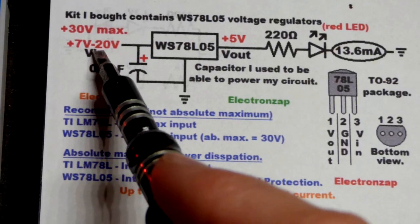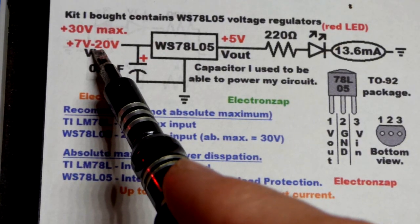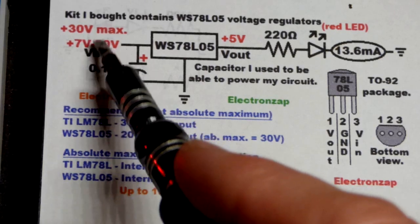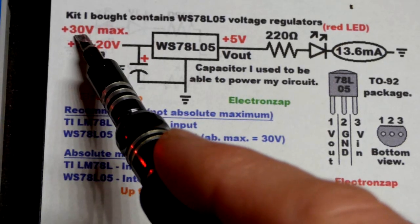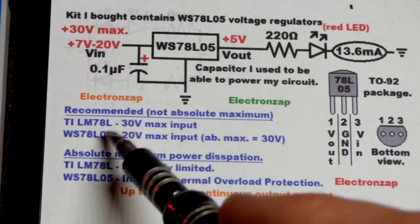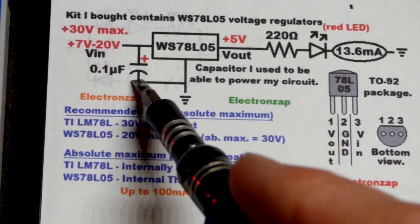And we come over here. So as we saw before, I used 7 volts to 20 volts to power this. That's the recommended voltage range. You can go up to 30 volts max with them, according to both datasheets.